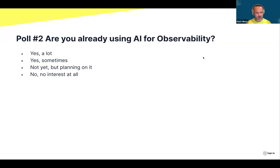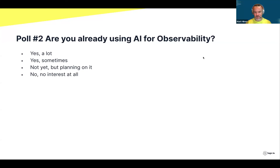Matt shares that as someone who has been a writer his whole career, he is absolutely using ChatGPT-type tools for certain tasks, but not for anything he wants to be super differentiated or unique. Results track: 67% are planning on using AI for observability, and 33% are using it sometimes. Observability is important, so people want to make sure AI is accurate and meaningful before they jump in too far.